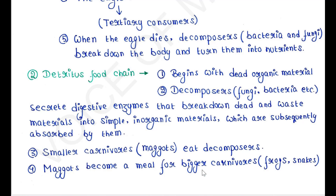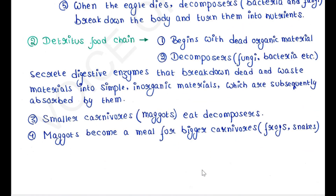Maggots become a meal for bigger carnivores such as frogs, snakes, etc. So this is all about today's lecture. I hope you liked the lecture. Thank you for watching my video.